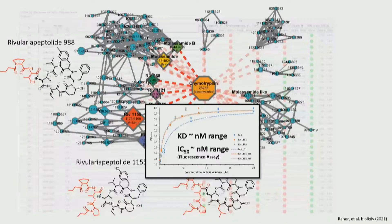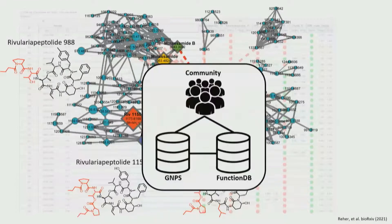I thought that was quite good. Taken together, I think this is a nice method to assign function — or particular protein-binding capabilities — to small molecules at high throughput scale. If we put this data back into our database, I hope this will help add function more systematically to non-targeted metabolomics experiments.